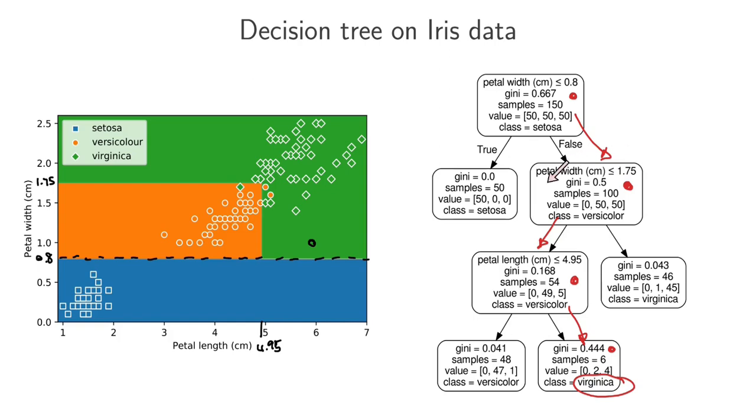Then we went to this node, and we asked, is the petal width less than or equal to 1.75? Now that node, again, actually separates out the input space into two regions. Now remember that this node is already above 0.8, so we're somewhere up here, and then we're asking, is my petal width less than or equal to 1.75? So what we're doing is we're taking that whole space, and then we're dividing it up even further with that line there.